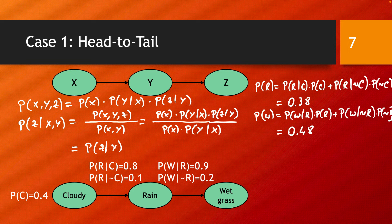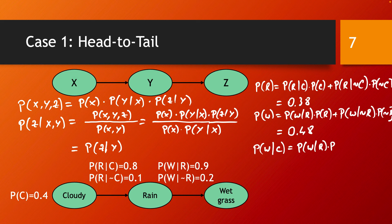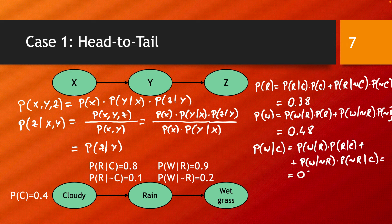We can also do deductive or causal reasoning. If we see the weather being cloudy, we can calculate the probability of the grass getting wet. We propagate the information about the cloudy variable being true throughout the network. P(W|C) is calculated through the intermediate variable R: it equals P(W|R) times P(R|C) plus P(W|¬R) times P(¬R|C). When we calculate this, we end up with 0.76.